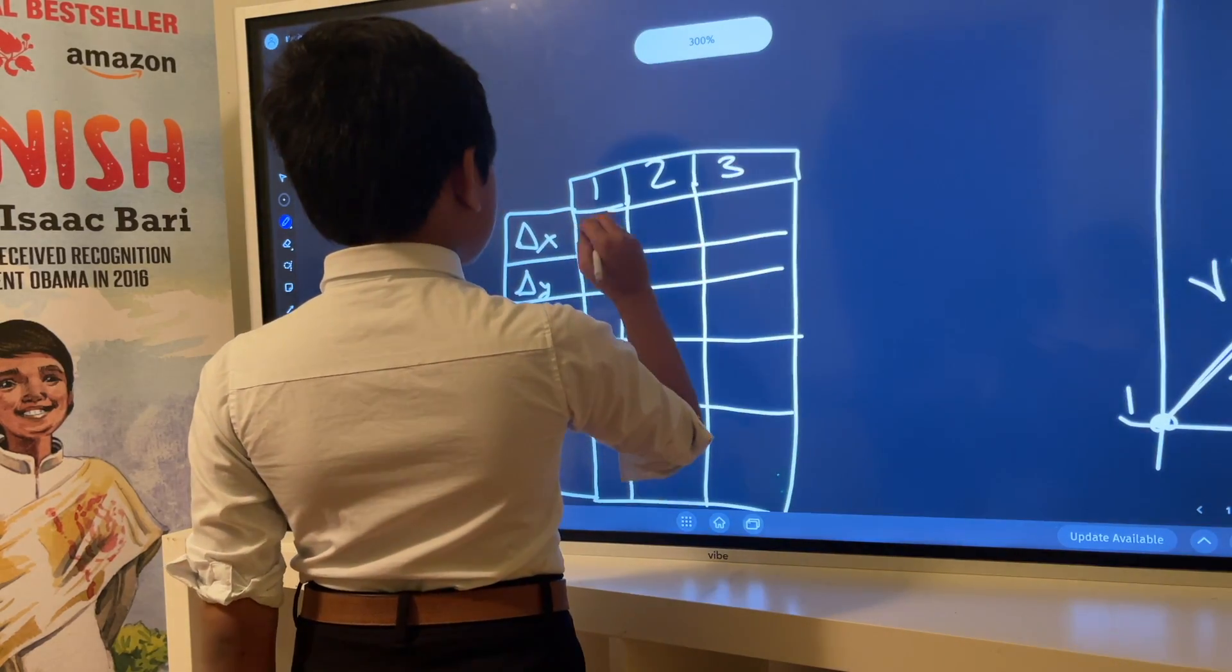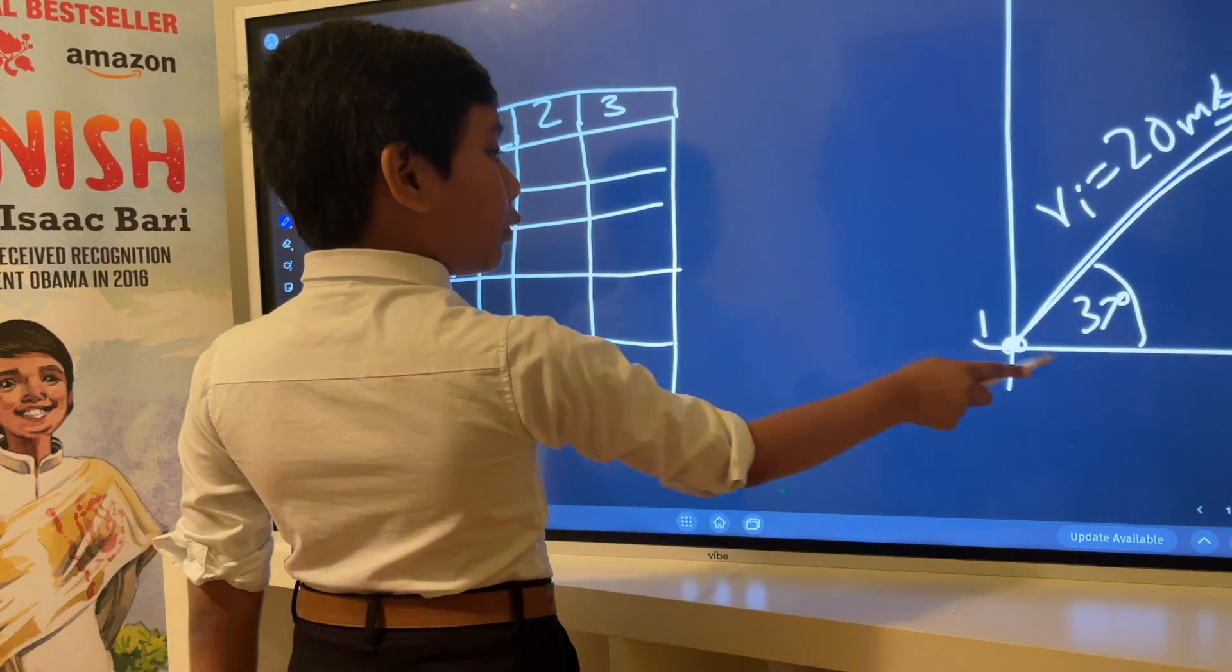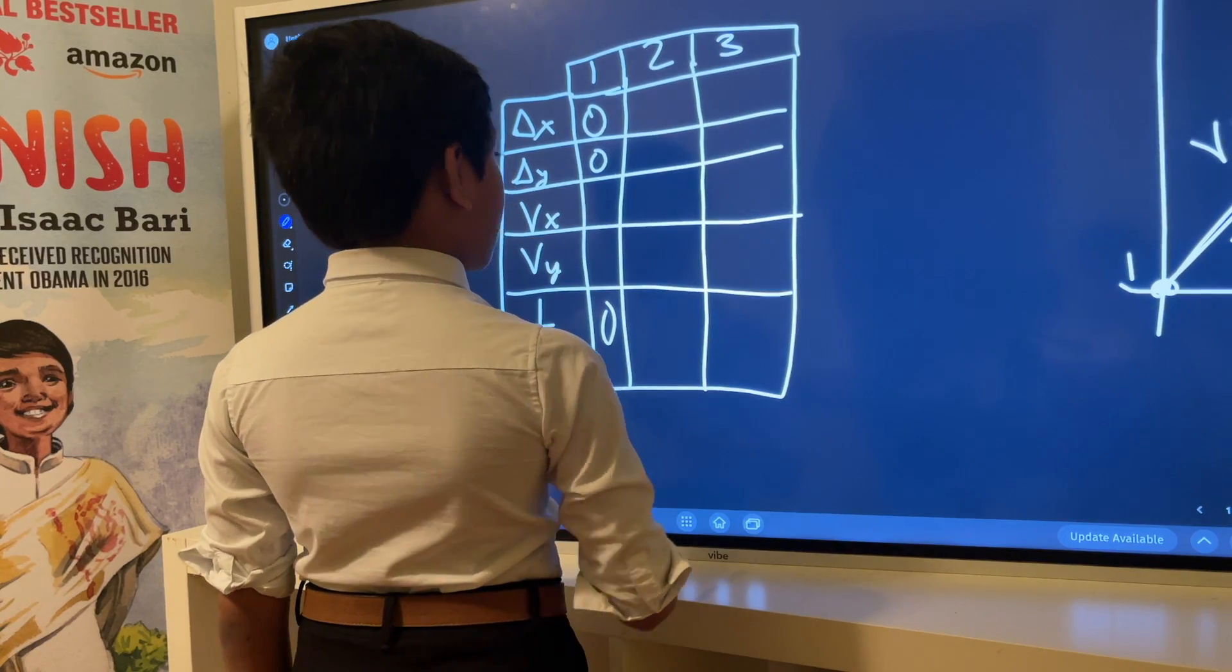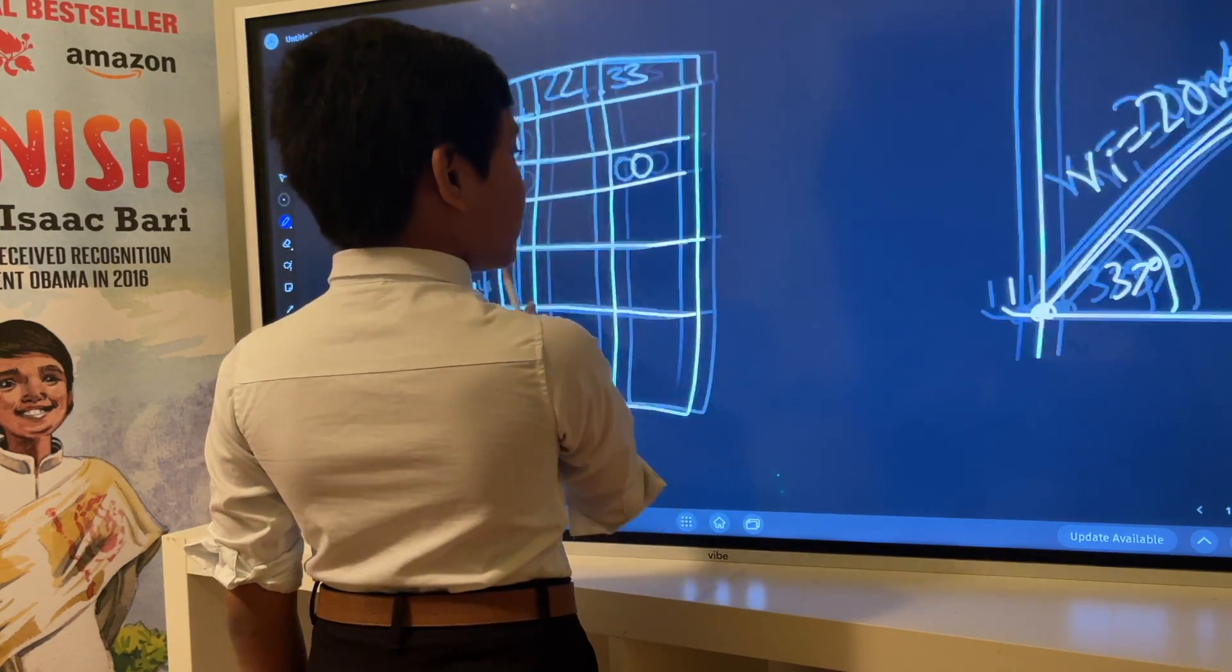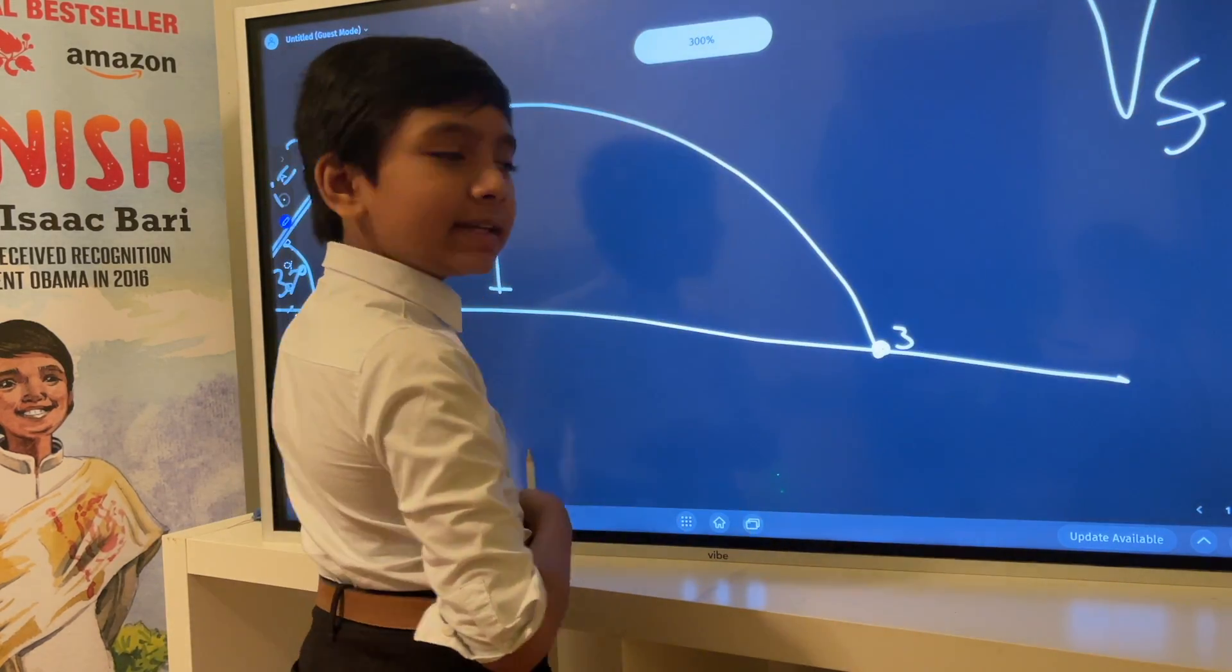Delta x, we know it has not traveled anywhere at the beginning at point one, and we know that no time has elapsed at that point. We also know that the displacement in the y is 0 at point 3 because it reaches the ground again.